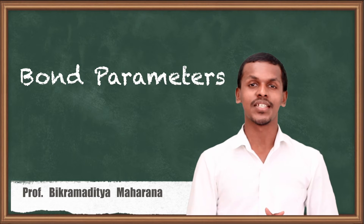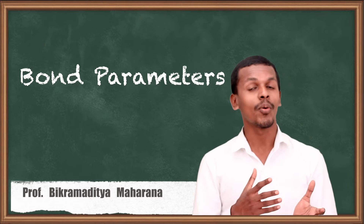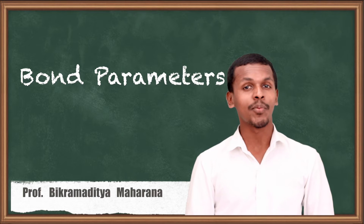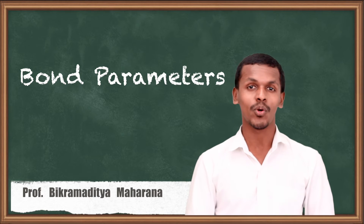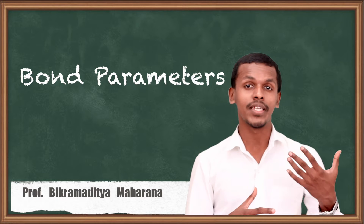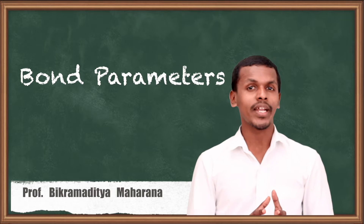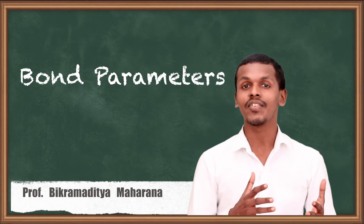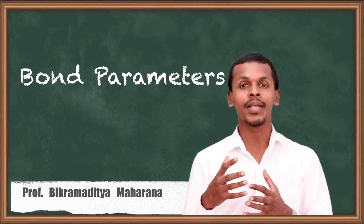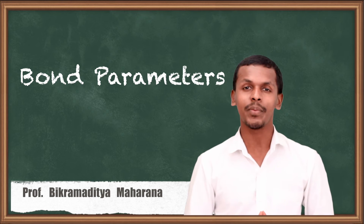Hi friends. In the previous lecture we got to know what the octet rule is, and based on that we also made an arrangement of how bonds are formed because of the octet rule. We also discussed the inadequacies of the octet rule and how certain molecules form bonds even without following it. Now we are going to talk about bond parameters, which play a vital role in understanding how strong a bond is and what the interaction is between particular atoms forming a bond.